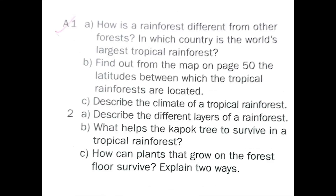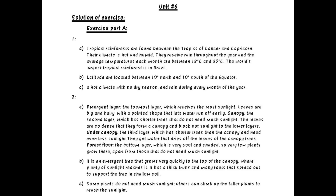Exercise Part A2B: what helps the capoc tree to survive in a tropical rainforest? It is an emergent tree that grows very quickly to the top of the canopy where plenty of sunlight reaches it, and it has a thick trunk and many roots that spread out to support the tree in shallow soil. How can plants that grow on the forest floor survive? There are two ways: some plants do not need much sunlight, and others climb up the taller plants to reach the sunlight.